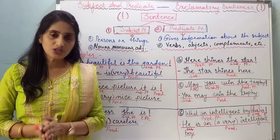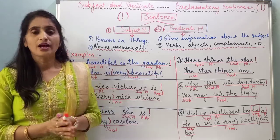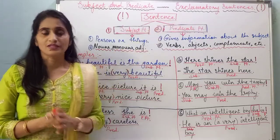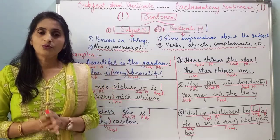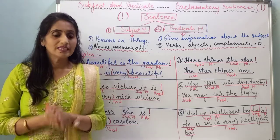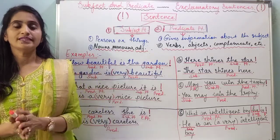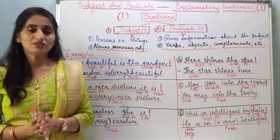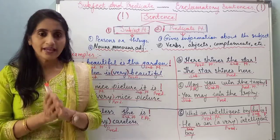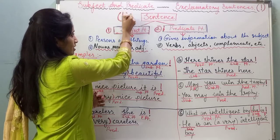We are going to study how to identify the subject and the predicate part in exclamatory sentences. The sentences which express strong feelings are called exclamatory sentences. These sentences end with an exclamation mark — this is the exclamation mark.